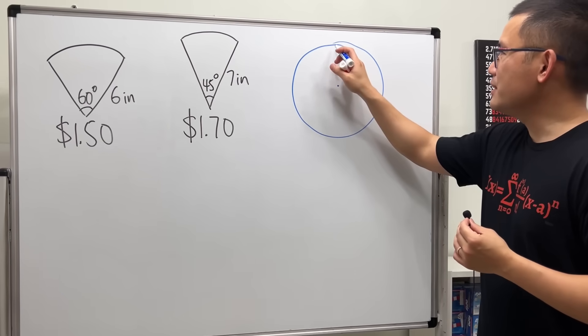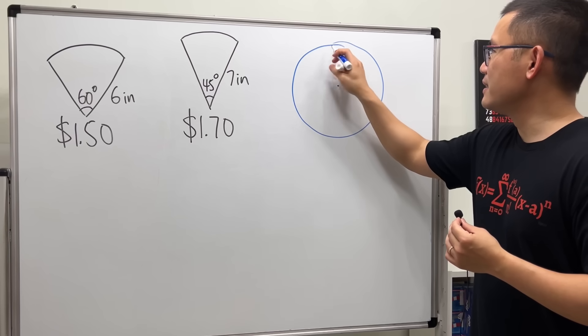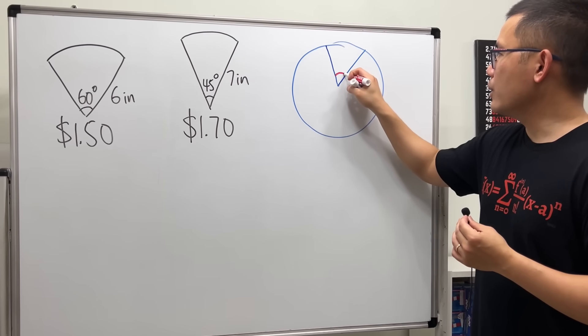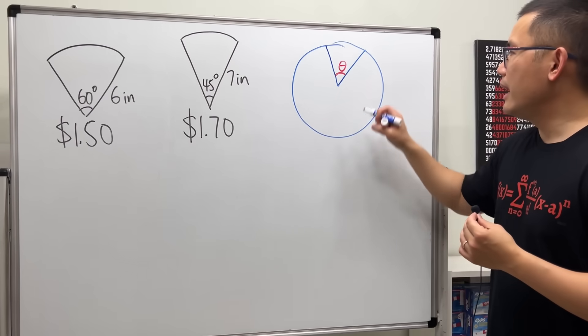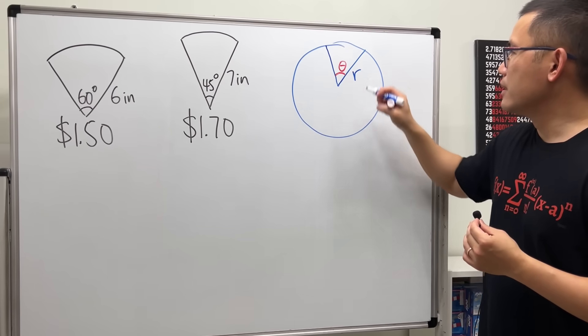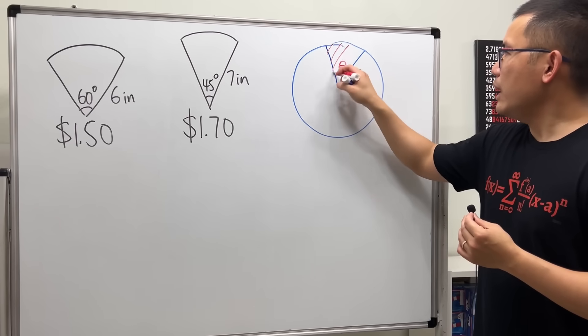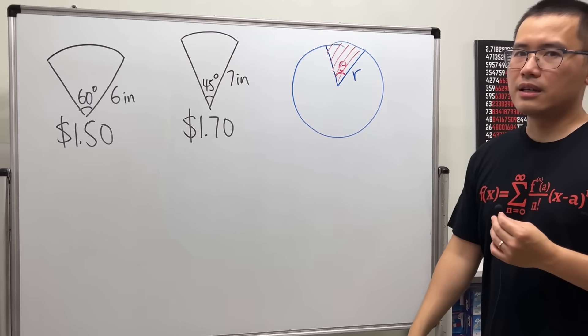Let's just consider we have this slice here and this angle here I'm going to call that theta, and let's say we have the radius of the circle being r.